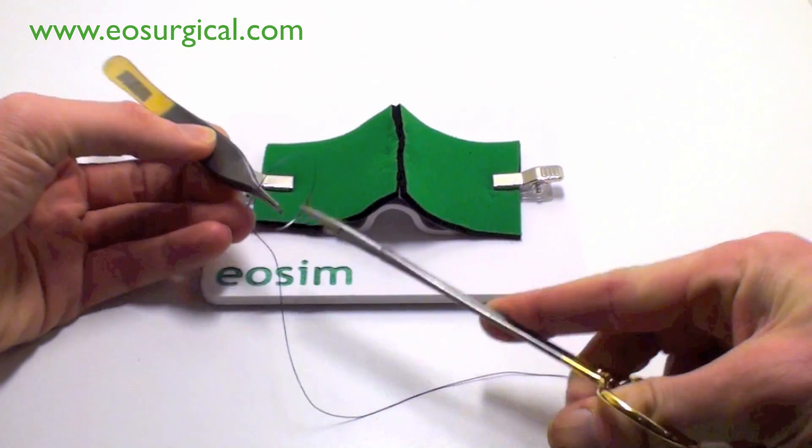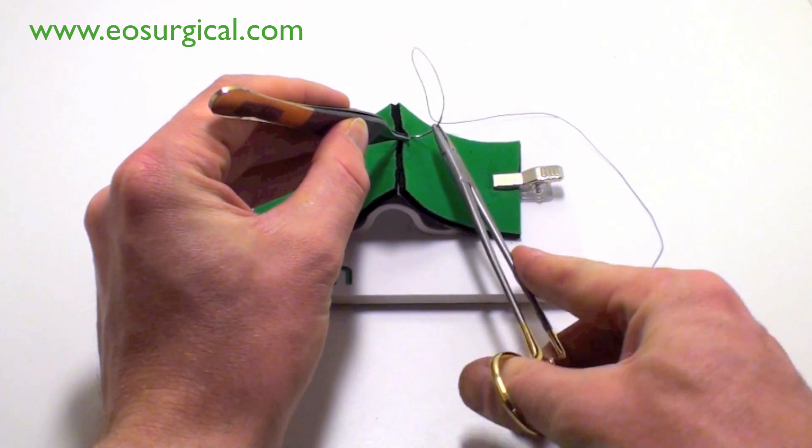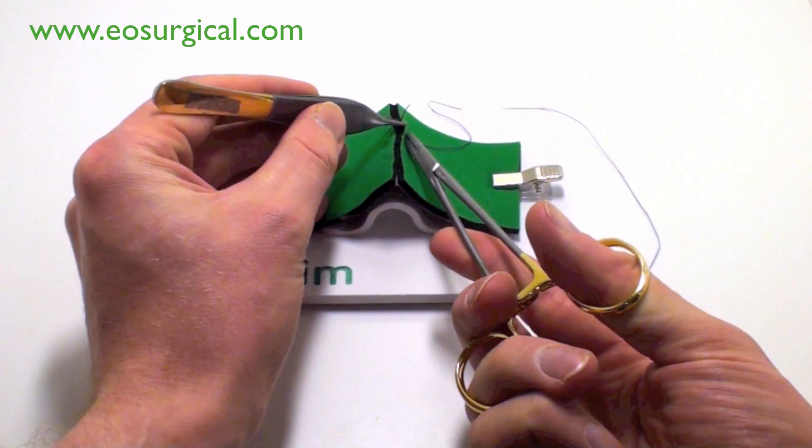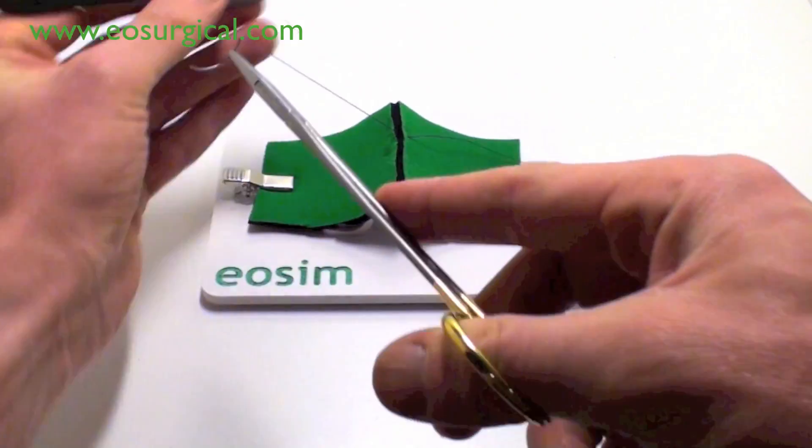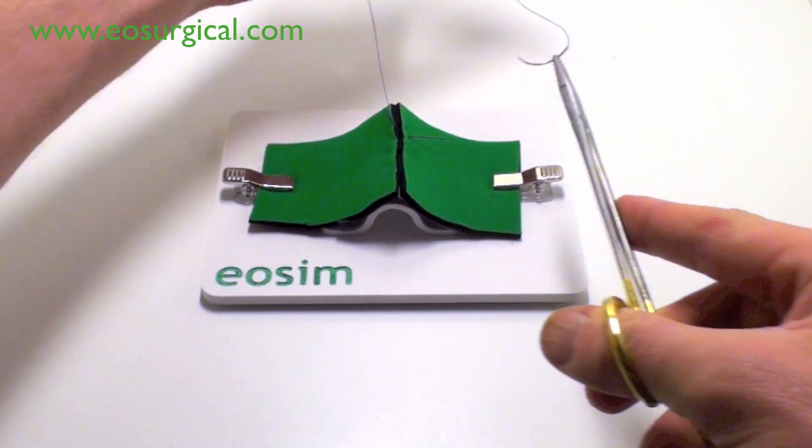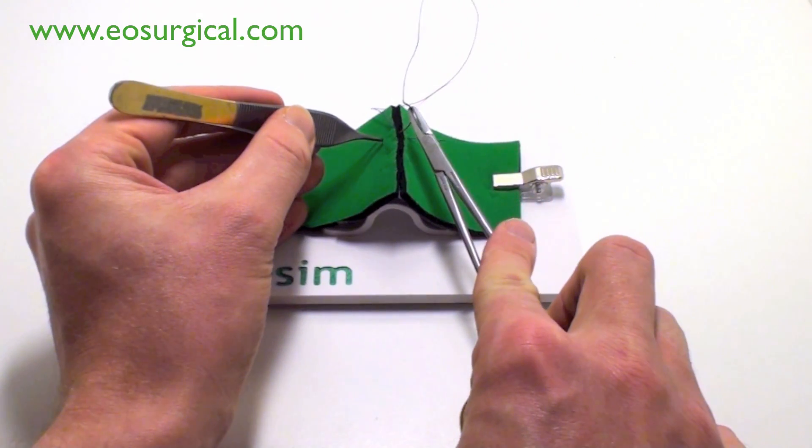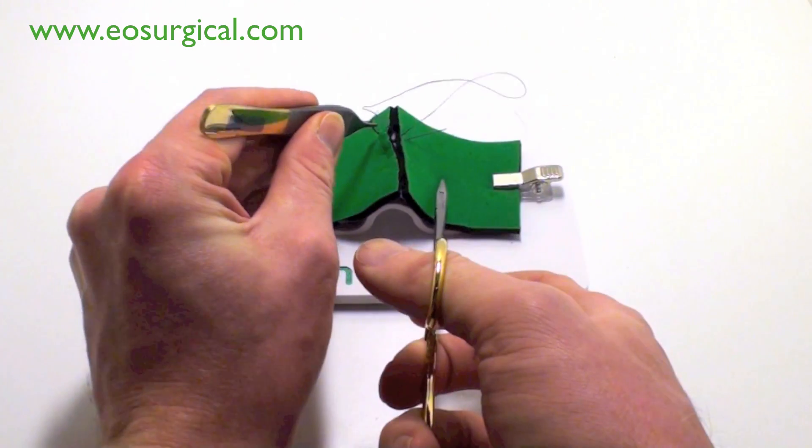Now, let's look at this from a more expanded point of view. This will show you what the surgeon's hands are doing. Again, note how the wrist is rotating to allow the suture and needle to curve through the tissues. And again here.